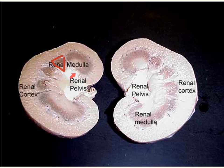The renal pelvis is a cavity within the kidney and is continuous with the ureter that leaves through the hilum. The pelvis has portions that extend toward the apex of the pyramids; these extensions are known as calyces — the large ones are the major calyces and the smaller ones are the minor calyces.